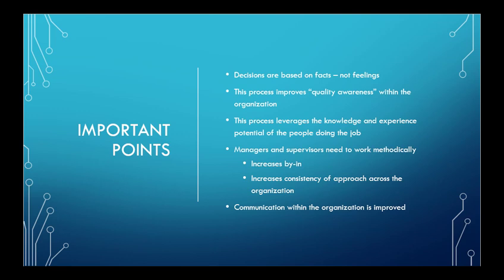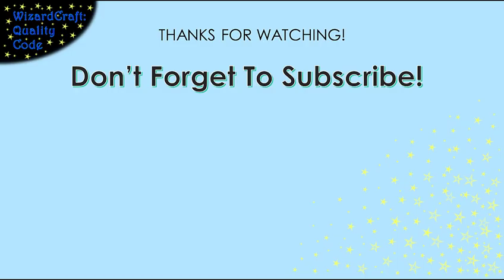In order for this to really work, the managers, supervisors, and people who are gathering the data need to work methodically, and they need to make sure that they talk to everybody about what's going on. This is going to increase everybody's belief that this is a good thing to do, and it's going to increase consistency of using statistical process control across the whole company. The bottom line is that communication within the organization will be improved.